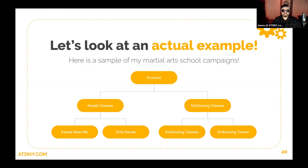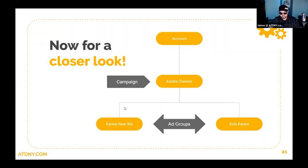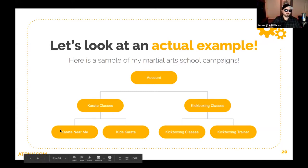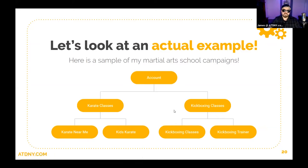Let me show an actual example. I do Google Ads for martial arts schools. Here's a sample of my martial arts school campaigns. I have an account, then I break the martial arts school out into services they offer — so I have a campaign for karate classes and a campaign for kickboxing classes. Below karate classes I have ad groups such as 'karate near me,' 'kids karate,' 'kickboxing classes,' etc. This hierarchy lets me quickly see which campaigns are winners and which need more work.